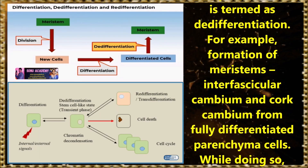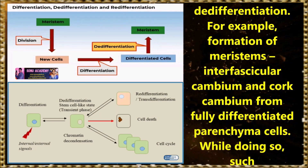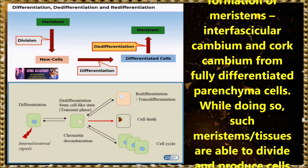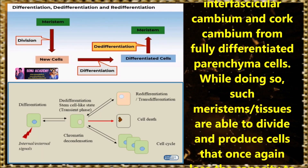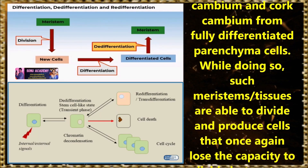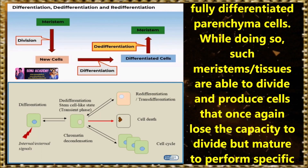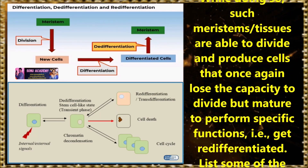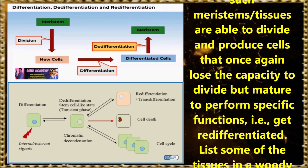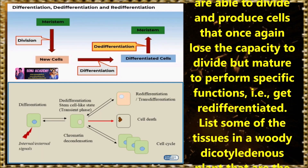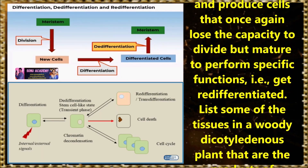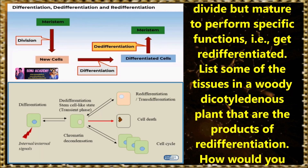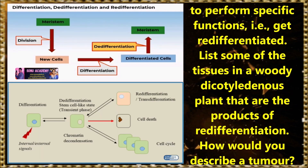For example, formation of meristem, intrafascicular cambium and cork cambium from fully differentiated parenchyma cells. While doing so, such meristem tissues are able to divide and produce cells that once again lose the capacity to divide but mature to perform specific functions — that is, get re-differentiated.